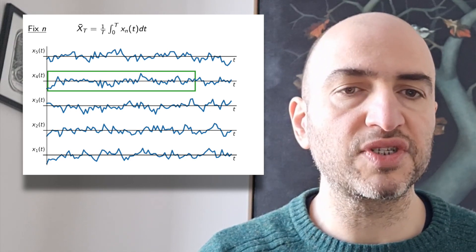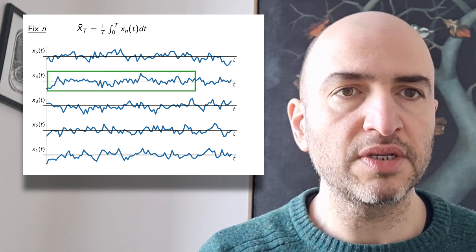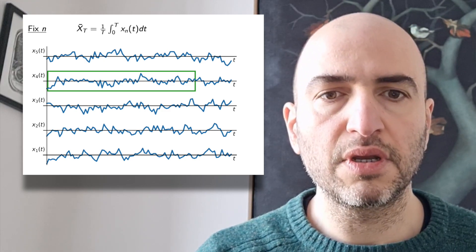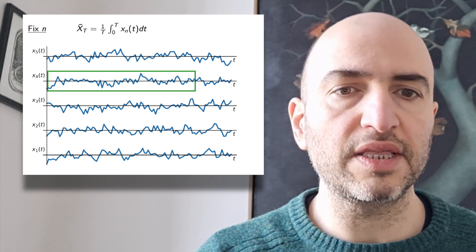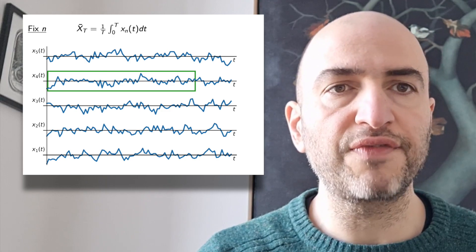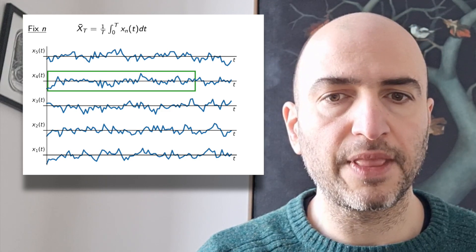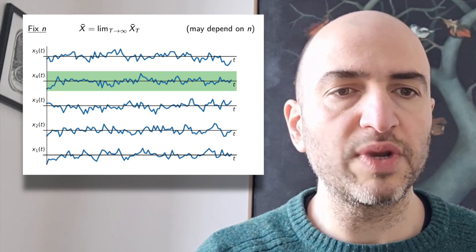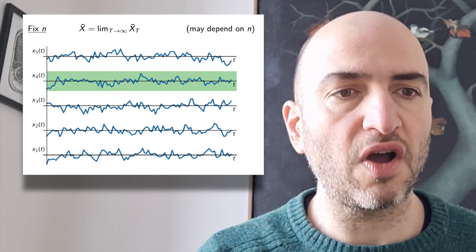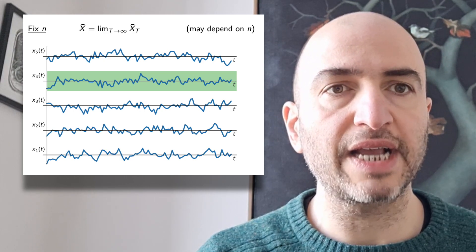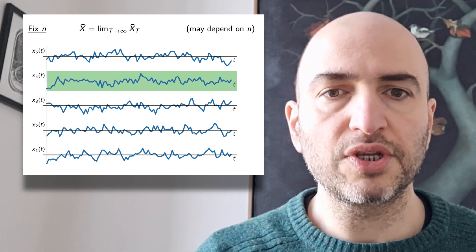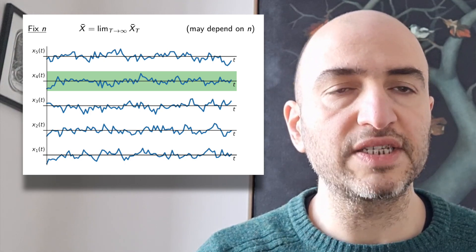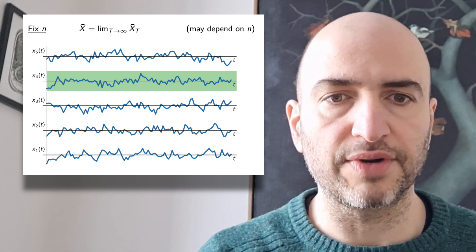We integrate from some start time to some end time and then divide by the window length. When the window length is finite, we call this a finite time average. And if we let the window length diverge, then we get what we call the time average, which we denote x bar. So the time average is the average value along a single long trajectory.